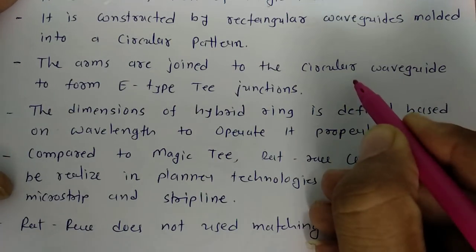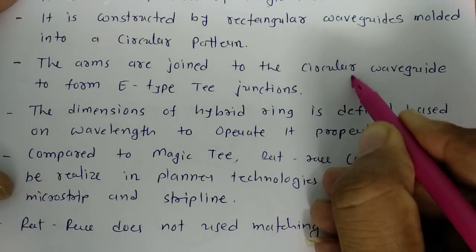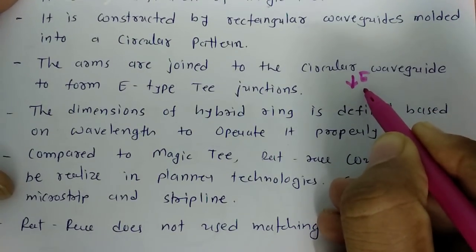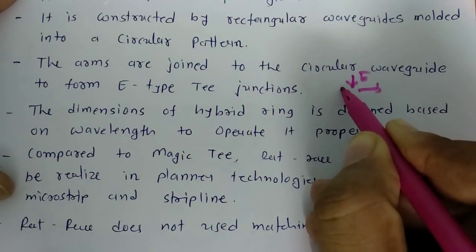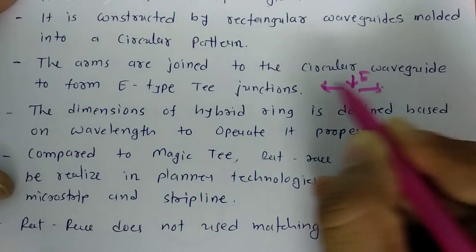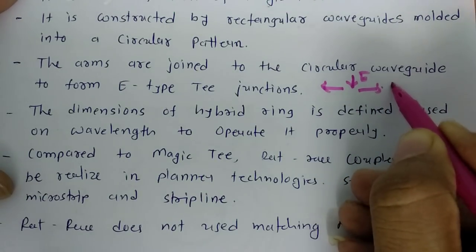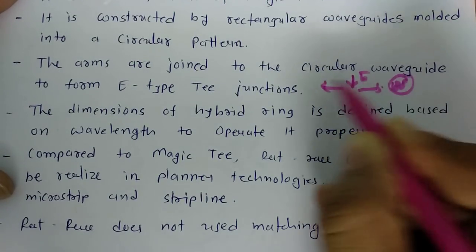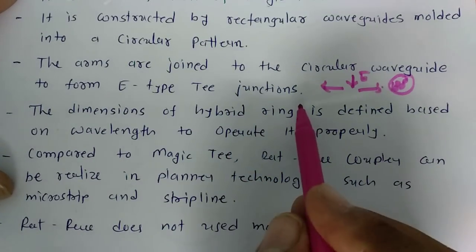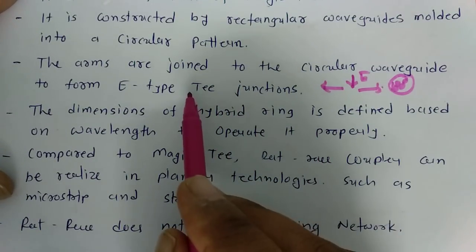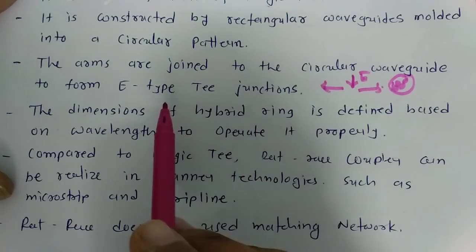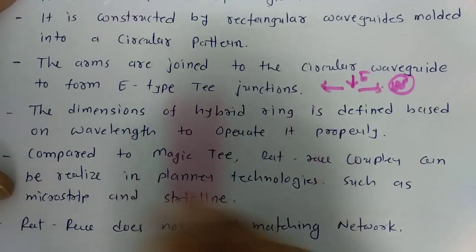that signal gets bisected into two wings. One wing will have a signal that is 180 degrees out of phase with the other. For example, if the signal is getting bisected into two wings, those two outputs are 180 degrees out of phase to each other. That is how E-plane T junctions work, and that is the junction present in the hybrid ring.